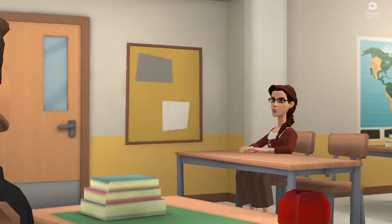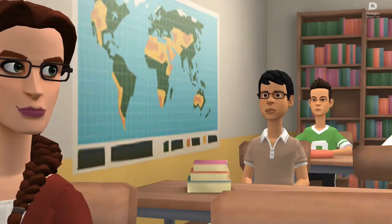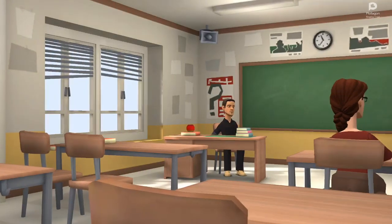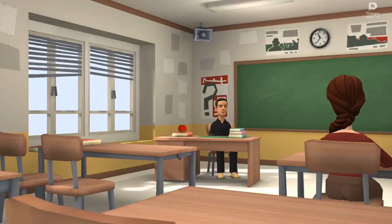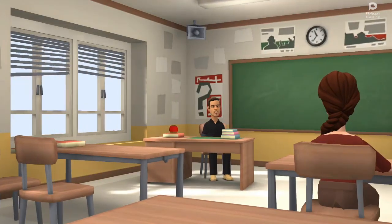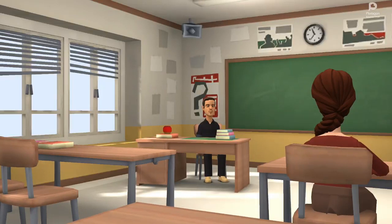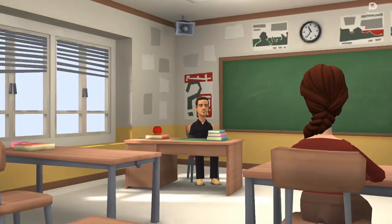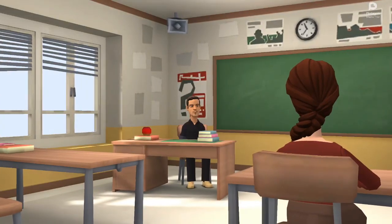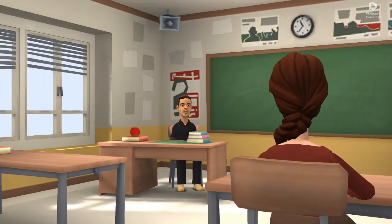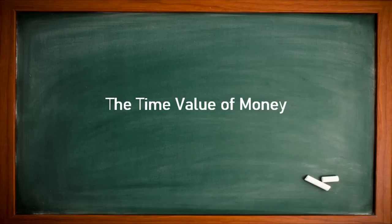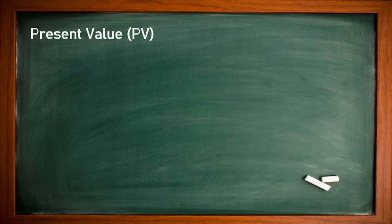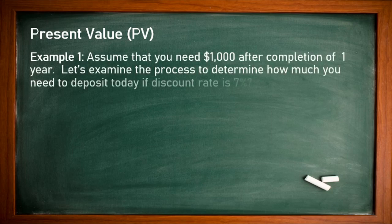Good morning. So let's start today. As you remember, in the first video we discussed simple interest rate along with the time value of money introduction. In the second video we discussed compound interest rate and future value. Today we will start present value — Time Value of Money, Part 3. Present value is shown with PV. Let's go through an example to understand present value.